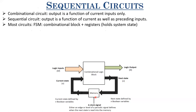However, if this is a negative edge triggered register, whenever this clock signal makes a one-to-zero transition, whatever value is present at the input will be transferred to the output. This happens at the next clock edge — the next state coming at the next clock edge, as soon as the active clock edge comes, this will be transferred and will become the current state of the system. This is how your sequential circuits or FSM block is defined.